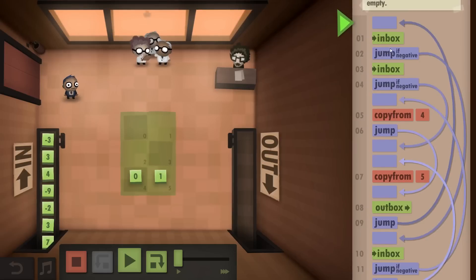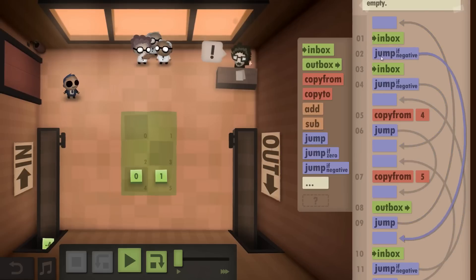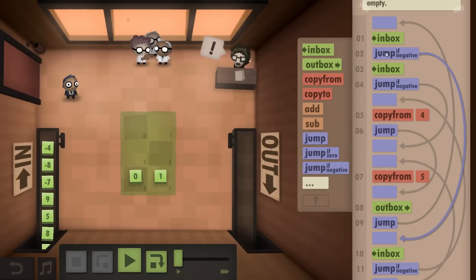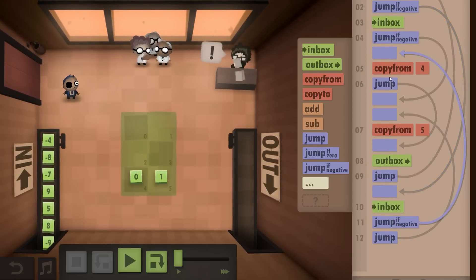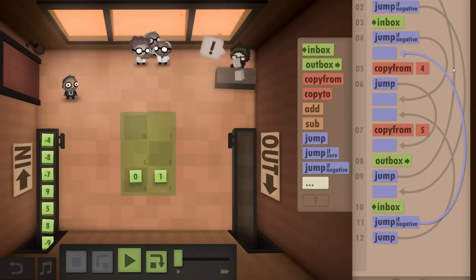So essentially, Inbox, Inbox and each time, basically you branch out here, take the Inbox, you branch out. If it's negative, you do a second check. If that check is also negative, you copy from 4 because 4 is the 0, the same sign.